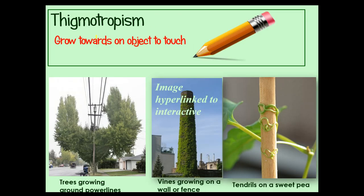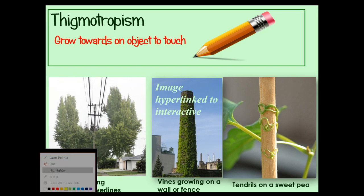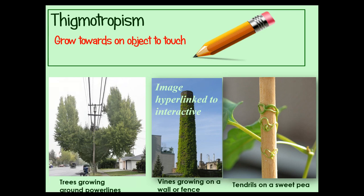The last plant response is thigmotropism — responding to touch. A lot of plants need to grow and wrap themselves around something. They can actually sense when things are there and reach out to grab onto them.